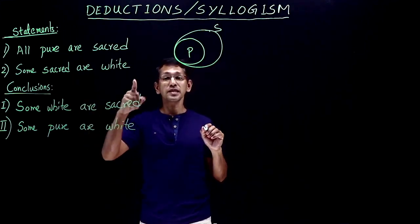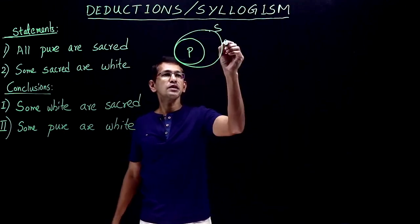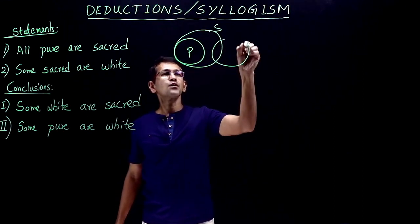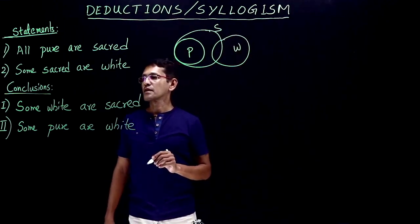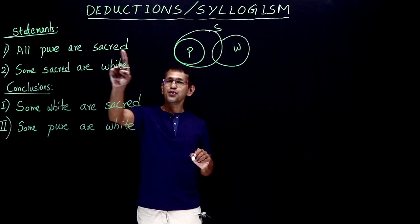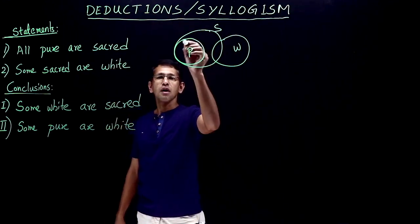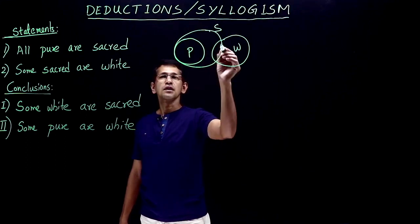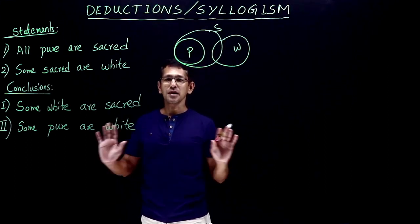It doesn't say some pure are white; it says some sacred are white. So, that would be an intersection between sacred and white. We have two statements: first, all pure are sacred; second, some sacred are white. That's the basic diagram.